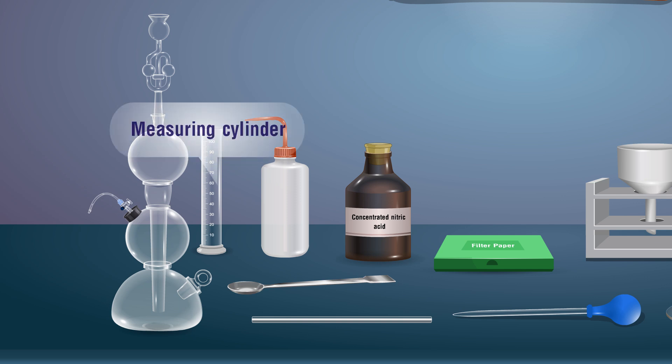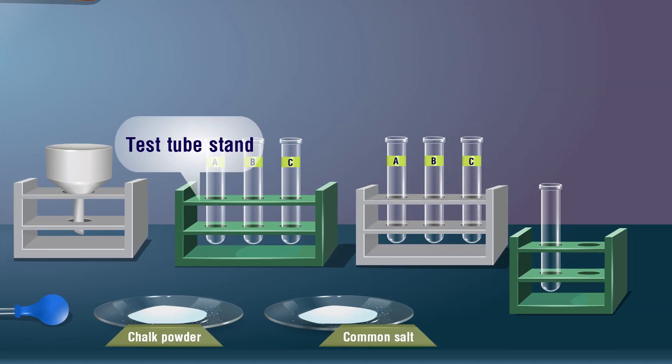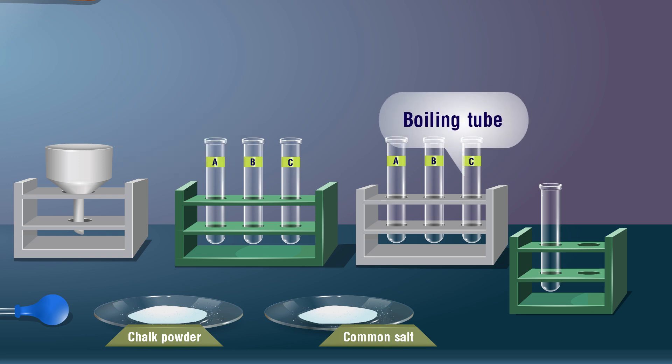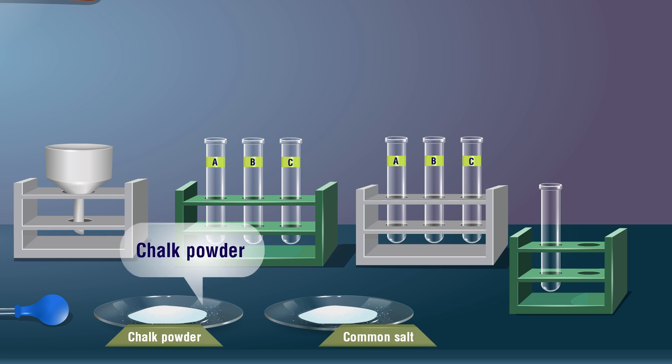Materials required: Kipp's apparatus to get hydrogen sulfide gas, measuring cylinder, distilled water, concentrated nitric acid, spatula, glass rod, filter paper, funnel, dropper, test tube stand, boiling tube, common salt, chalk powder.